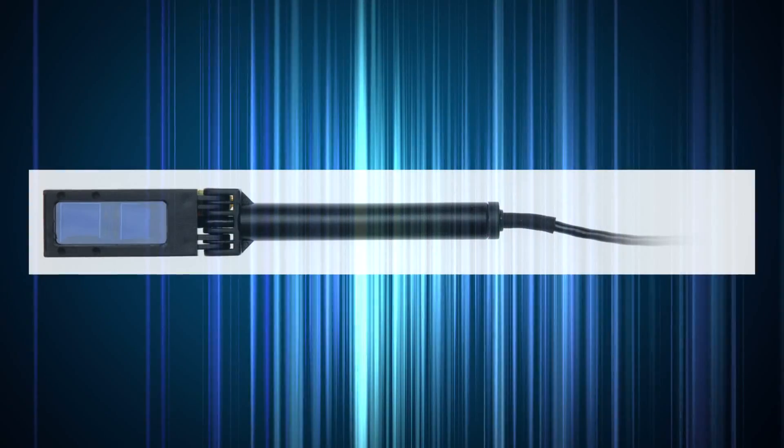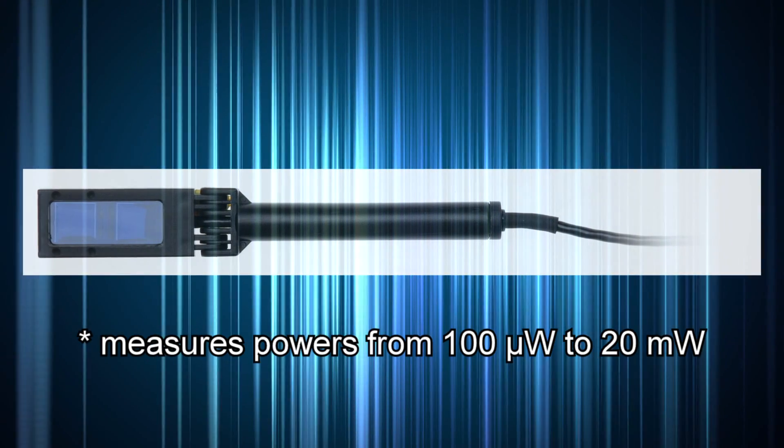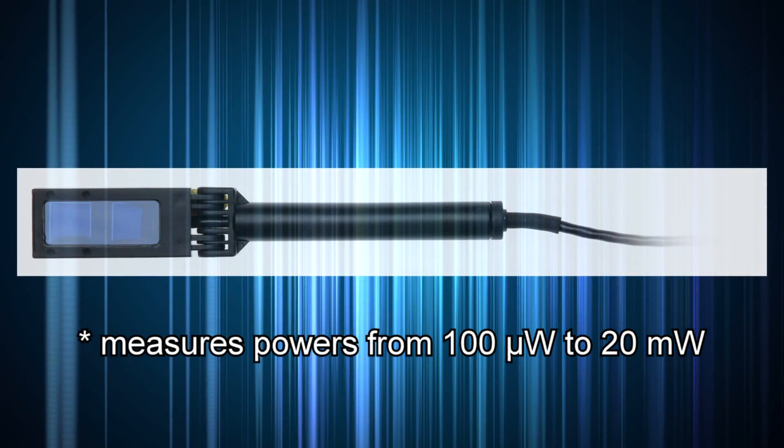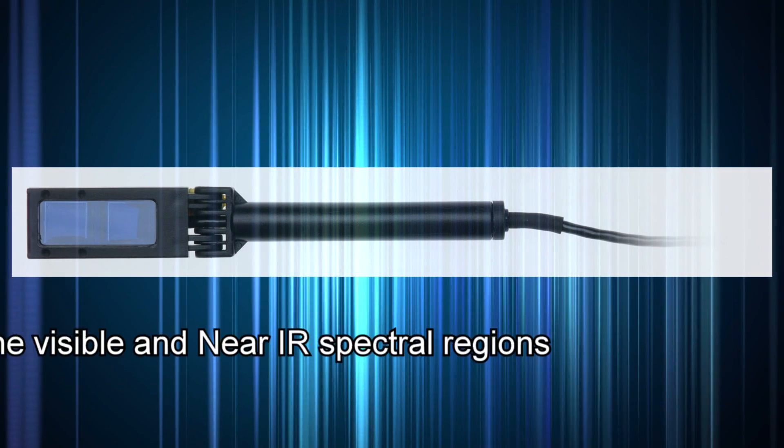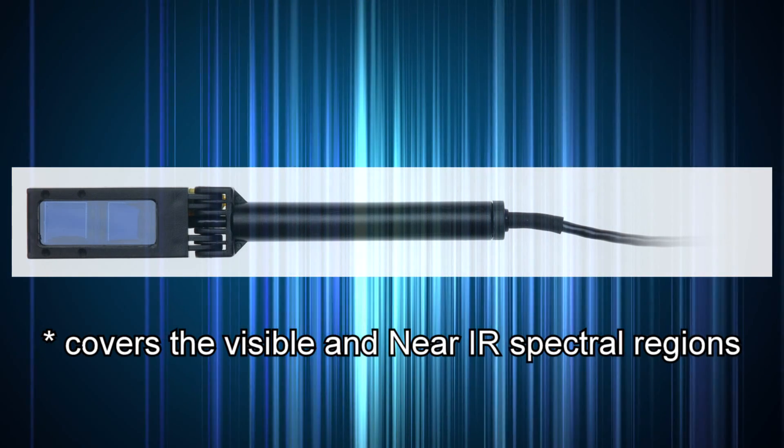For a scanned beam, this 13 microsecond minimum dwell time works out to a maximum scan speed of about 30,000 inches per second. The BC-20 can measure powers from 100 microwatts up to 20 milliwatts and covers the visible and near-IR spectral regions.